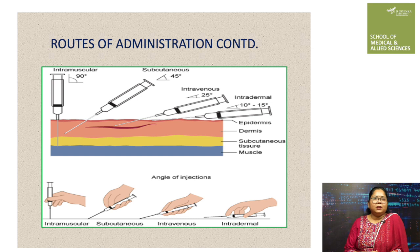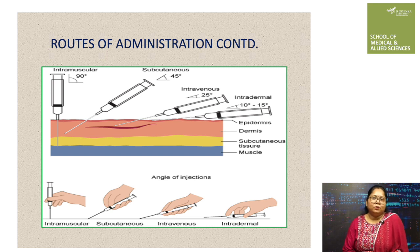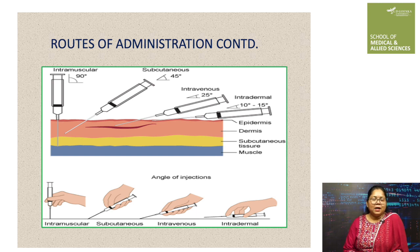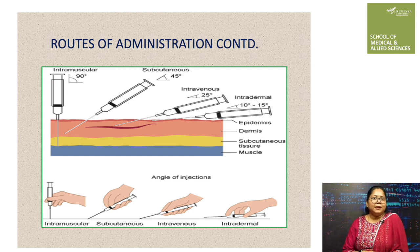The intradermal route involves administration of drugs within the skin at the dermis level, generally in the ventral zone of the forearm. Due to extremely low blood supply to the dermis, intradermal administration implies almost null systemic absorption of the drug. It is usually used for vaccines, local anesthesia, and for diagnostic purposes such as hypersensitivity testing. Intradermal injections are administered at a 10 to 15 degree angle.